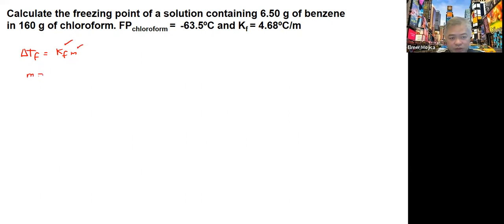So from the molality, we have moles over kilogram solvent. We can put here 6.50 grams over 78 grams per mole, that's the molar mass of benzene, and then we divide it with 0.160 kilograms. If we're going to do this calculation, we might get around 0.520 molar.